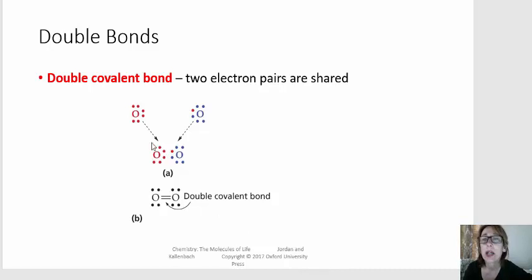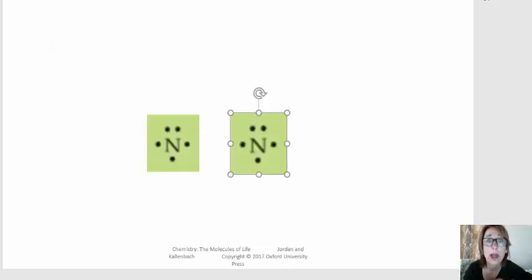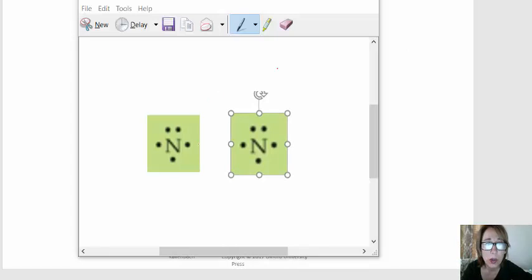Now we also have triple bonds, and we'll use nitrogen as our example. Nitrogen is in family 5A and it has five valence electrons. So if each nitrogen forms a bond with the other nitrogen, we still have two unpaired electrons and the octet rule has not been fulfilled.